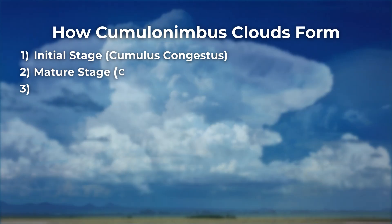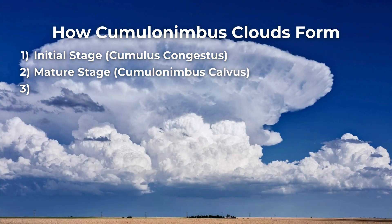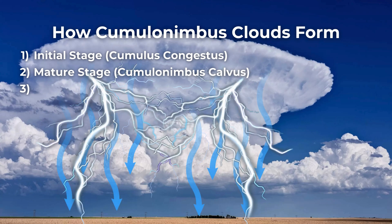Second, the mature stage: cumulonimbus calvus. Once the moisture condenses and turns to ice crystals, the convection and rising stop. The upper layers are made almost entirely of supercooled water droplets and ice crystals, which combine to form precipitation — normally hailstones — that begin to fall back through the cloud. The downward force of this falling precipitation generates downdrafts and an electrical charge, both extremely hazardous to aircraft. When the differences in electrical charges reach a certain level, huge lightning sparks become apparent both within the cloud and beneath it. At this point, the cloud is fully mature.